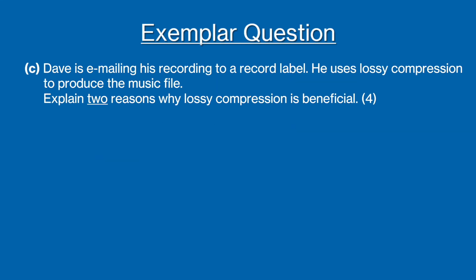Lastly, Part C asks to explain two reasons why lossy compression is beneficial to email the recording as a music file. This is one of those four mark questions I mentioned earlier. And the first thing I would do is underline or put a box around the word lossy. So you remember to talk about lossy and not lossless compression, as this is an easy mistake to make. Again, you want to be making two points and explain them both to get the full four marks. Here is an example of what you could write.